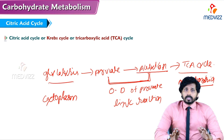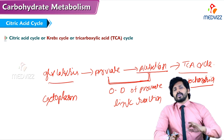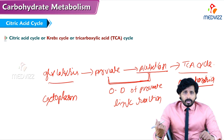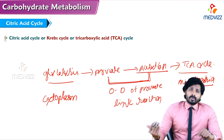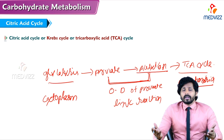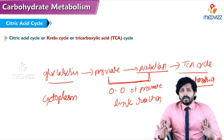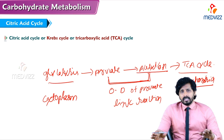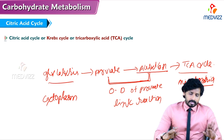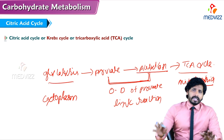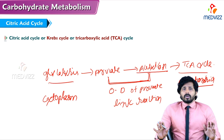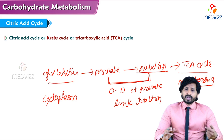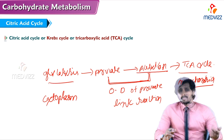TCA cycle is not only a continuation of glycolysis — it is also a common pathway for other metabolites like fatty acid metabolism, degradation of fatty acids, and protein metabolism. When proteins are degraded, they produce amino acids. When you remove the amino group from amino acids, you get keto acids, which can easily enter the TCA cycle via intermediates. So TCA cycle is a common pathway for all biomolecules: carbohydrates, lipids, and proteins.